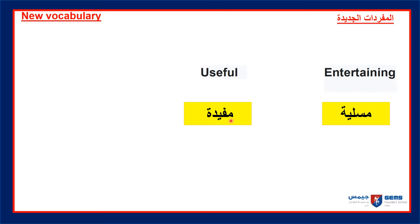مُفيدة — means useful. فَرْدِيه — means single; it's done by only one person. Like رياضة فَرْدِيه — it's a one-person sport.